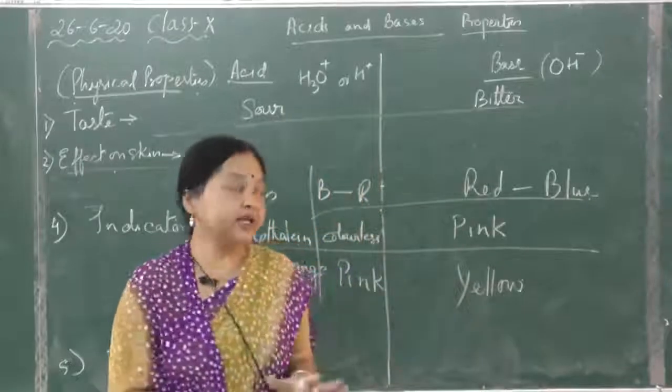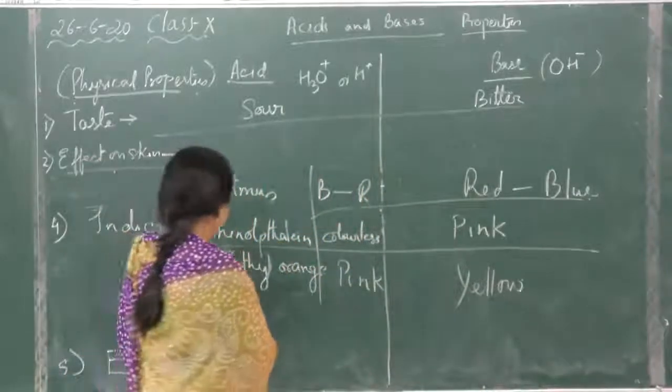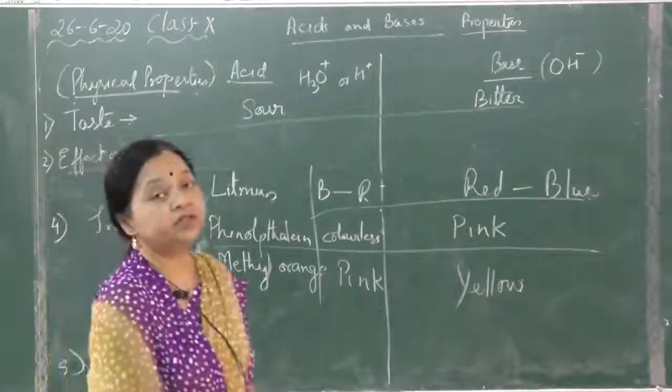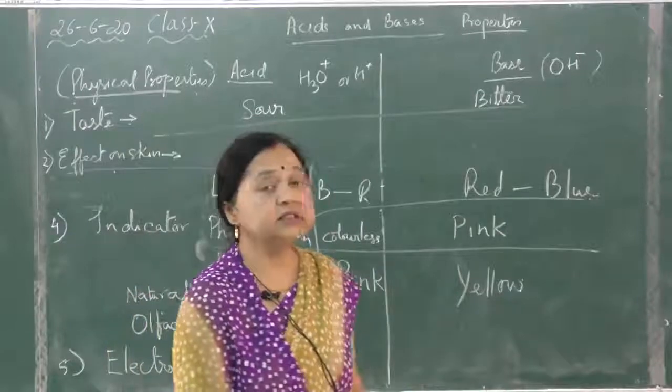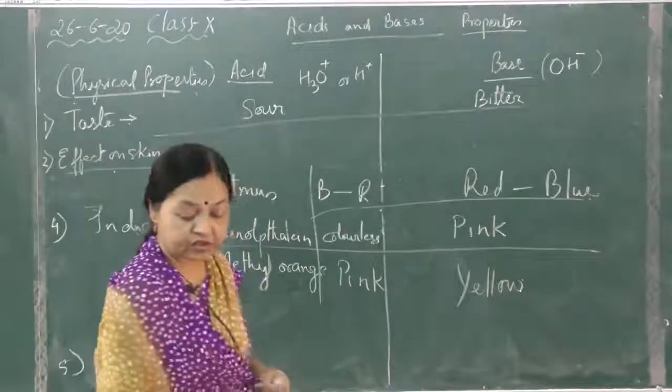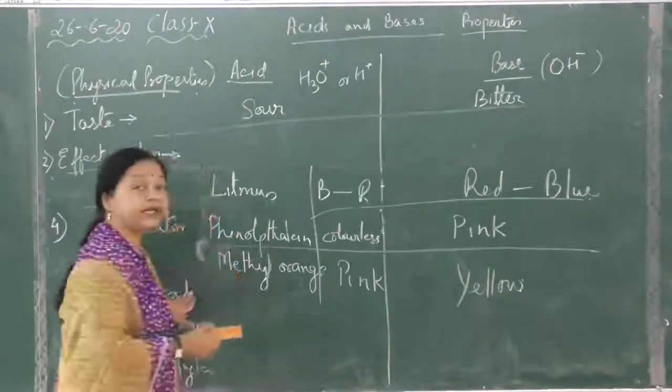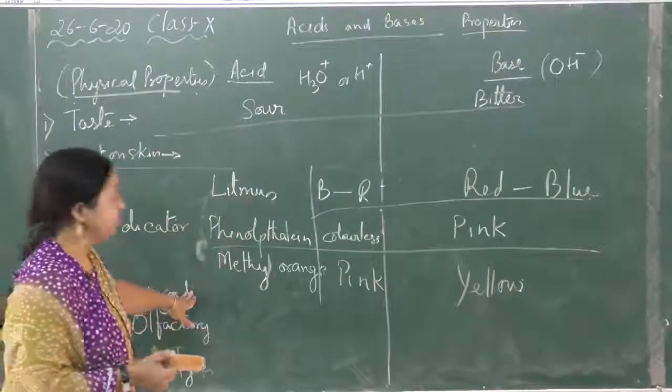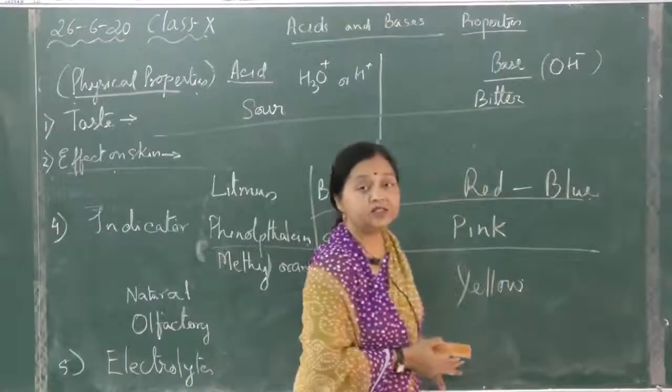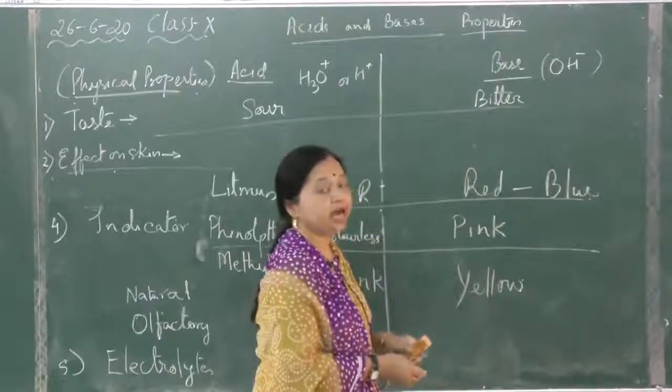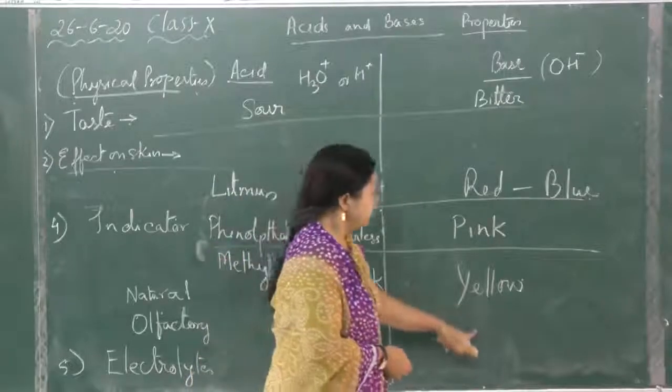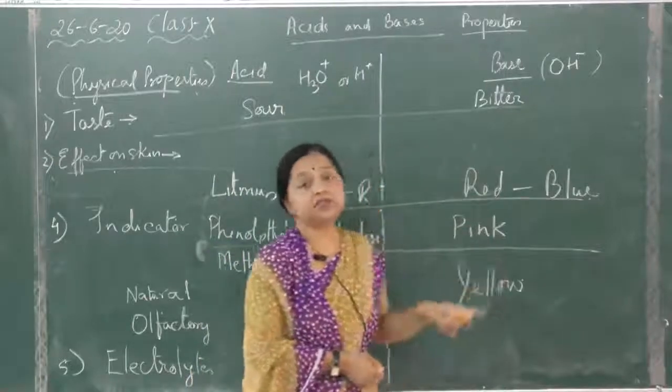Besides these general indicators, we have natural indicators also. Natural indicators like cabbage, china rose, hibiscus, turmeric, so many natural indicators are there. Red cabbage remains red in acid but in the alkaline solution it turns green. Turmeric turns brown in alkaline solution.